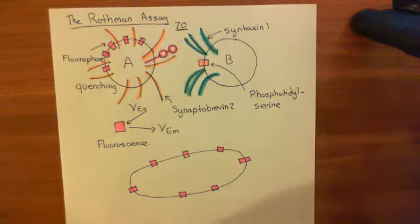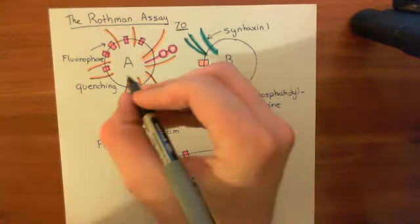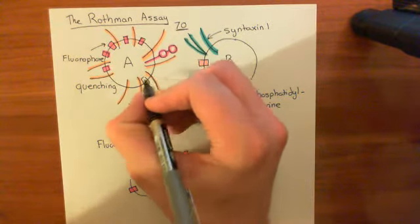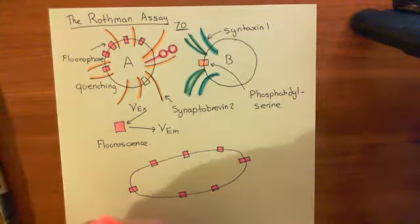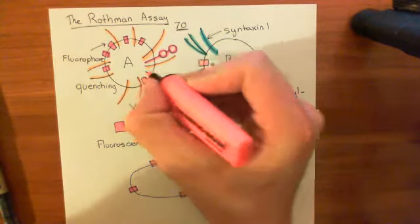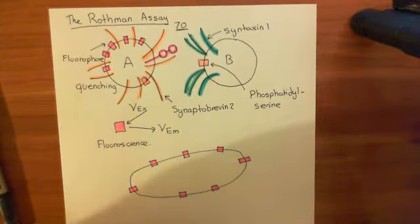Okay. Now, another interesting experiment that you can do is you can put phosphatidylserine in the membrane of the liposome A, basically, which is representing our synaptic vesicle. Now, what happens here? Well, actually, it stops fusion.